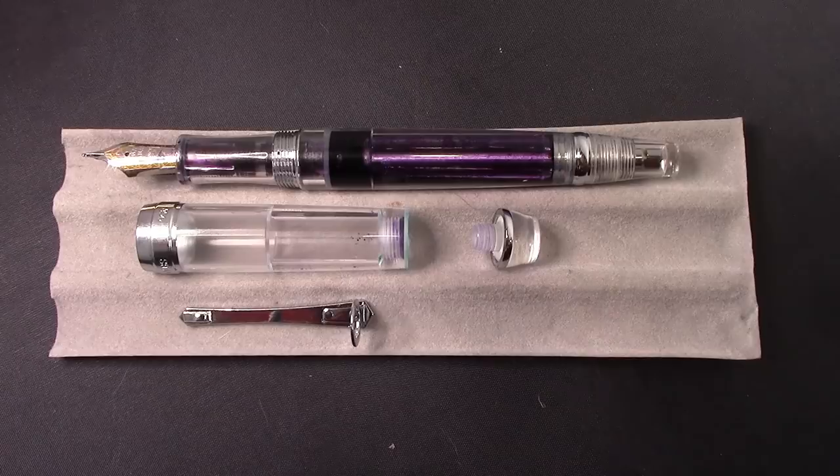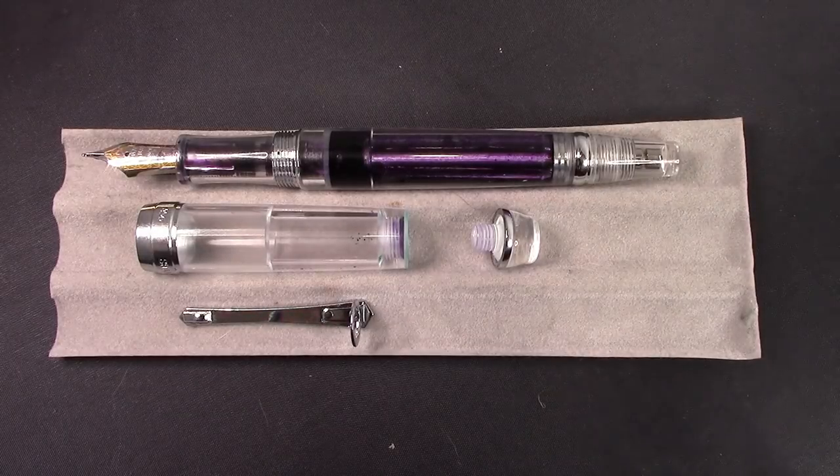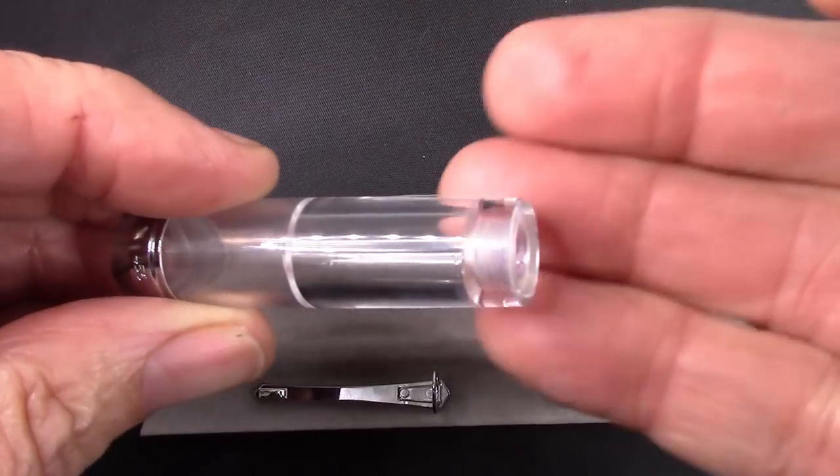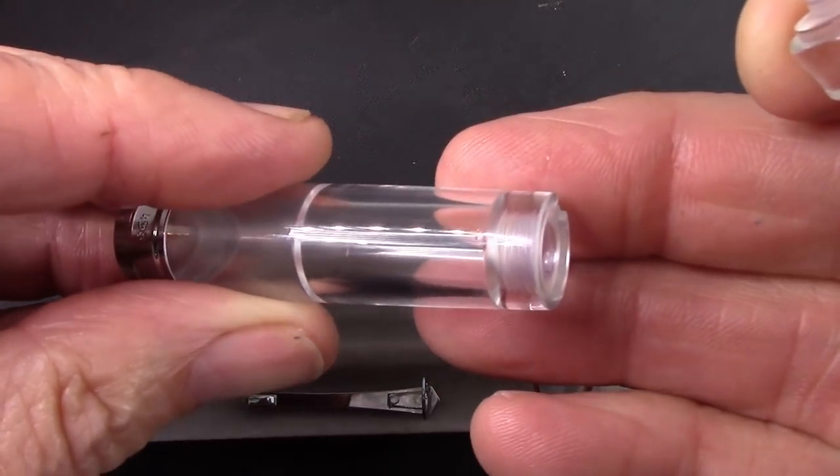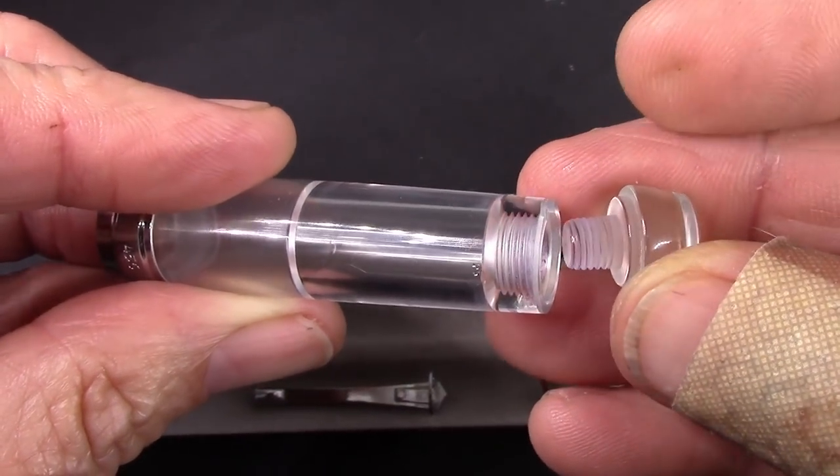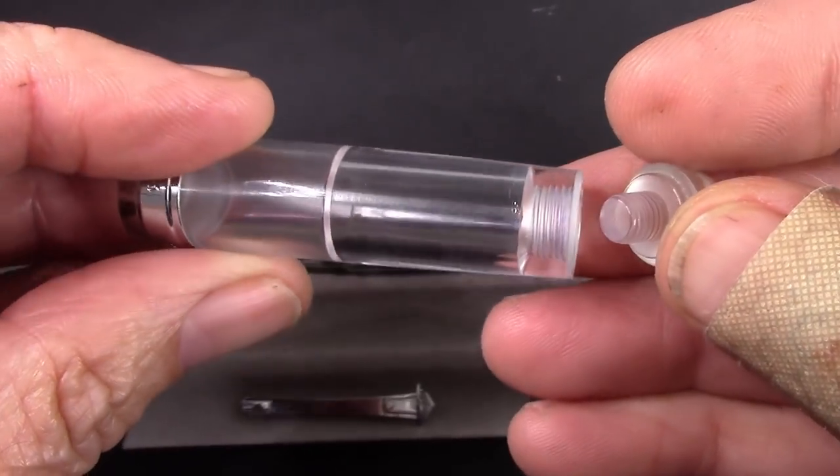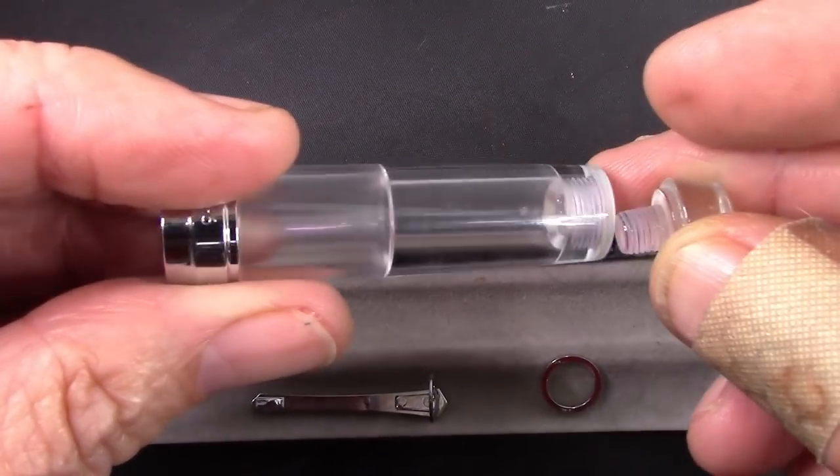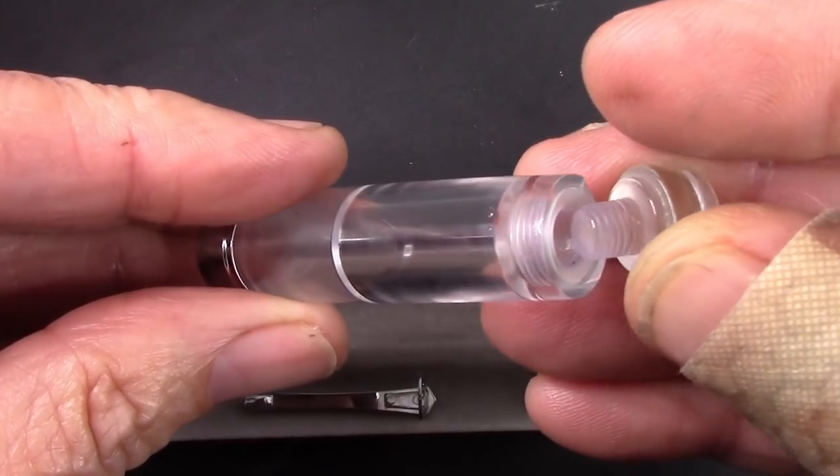I'm going to clean this up, silicone grease it, and hopefully that'll stop the nibs from drying out. I've cleaned out the ink. It cleaned out relatively easily as I expected. The last time I had ink in the threads, I just put water in here and let it soak for a couple hours and it pulled the ink out.